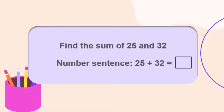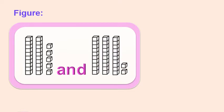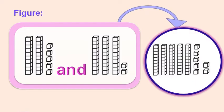Let's take another example. Find the sum of 25 and 32. Number sentence: 25 plus 32 equals blank. Let's try to answer this using figures. We have two tens and five ones for the first addend, and three tens and two ones for the second addend. When you add this all together, we get five tens and seven ones, which makes it 57.